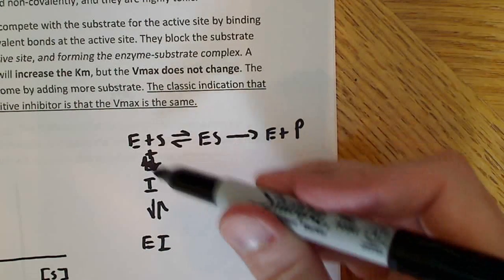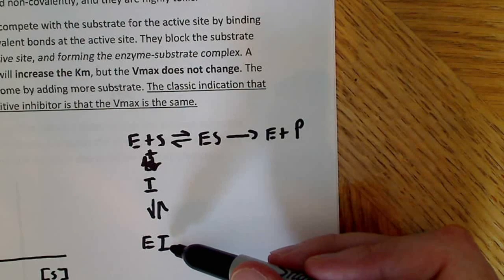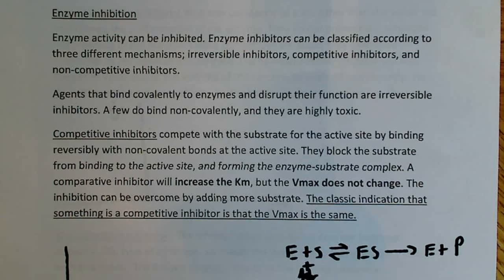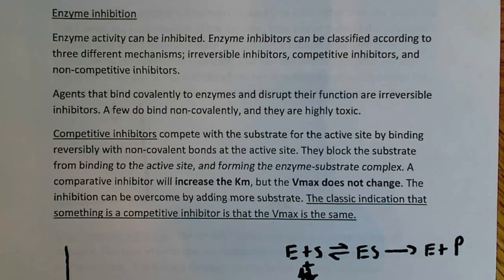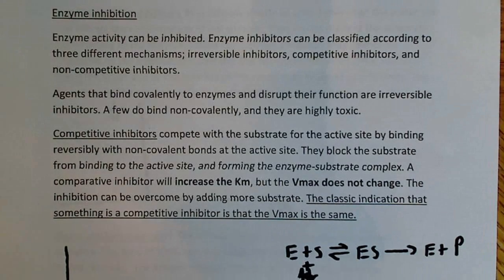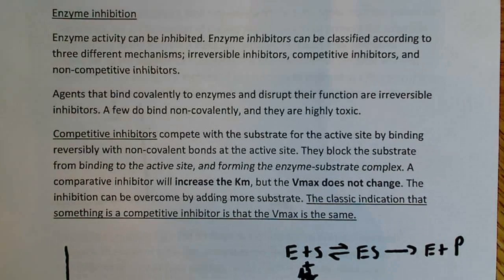All three species — enzyme, substrate, and inhibitor — are in solution simultaneously. The inhibitor competes with the substrate, forming the enzyme-inhibitor complex instead of the enzyme-substrate complex. Competitive inhibitors bind reversibly with non-covalent bonds (hydrogen bonds, hydrophobic interactions, ionic bonds) at the active site, blocking the substrate from binding and forming the enzyme-substrate complex.